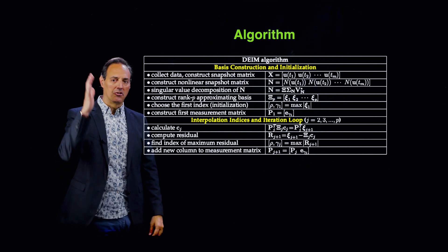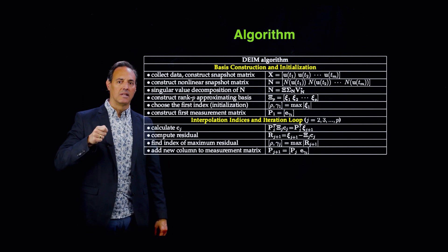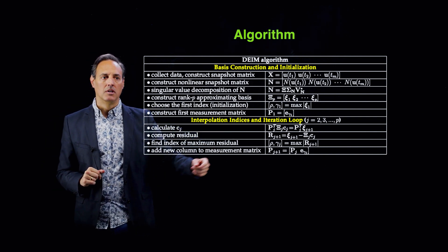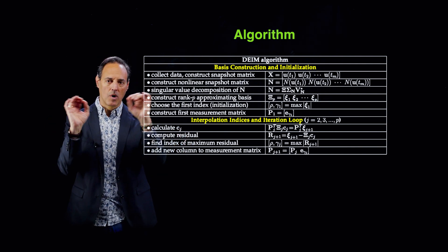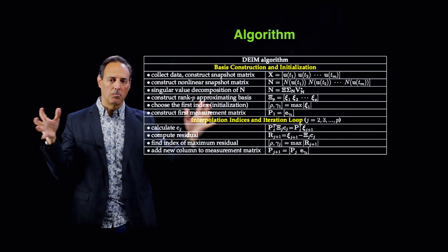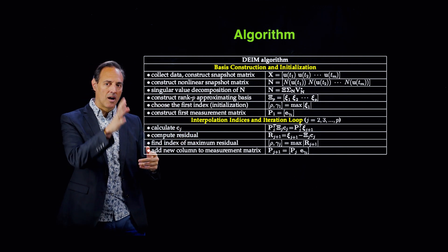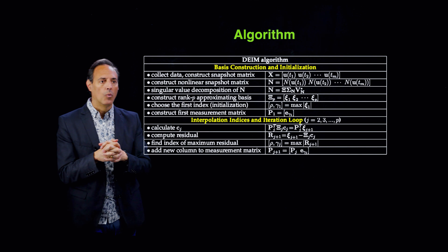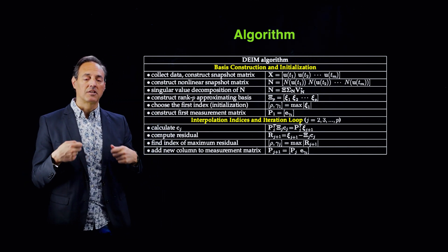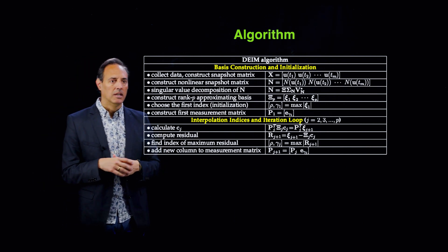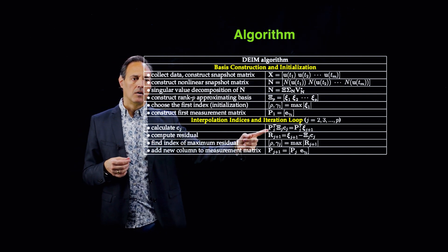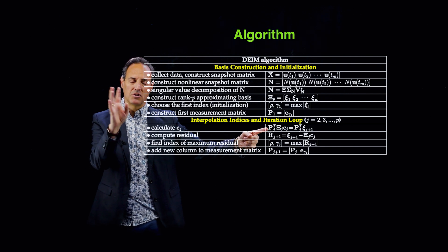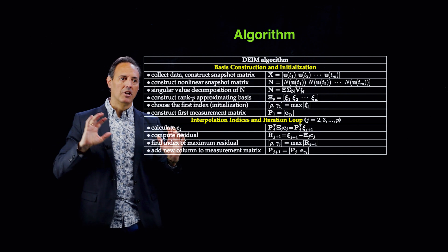The way the algorithm works: it first takes the dominant first mode C1, finds its maximum, and declares that the first interpolation point. That sets up the initial measurement matrix P1 — remember, the P matrix determines where you sample. Principally, it says: do the SVD of the nonlinearity, take the dominant first mode, find the maximum — that's your first sensor location. Then to select the next P locations, you project the current measurement subspace P1 onto the next mode.